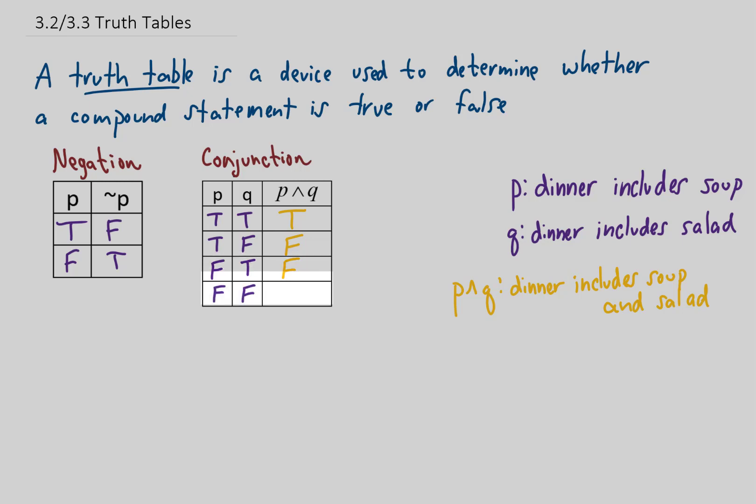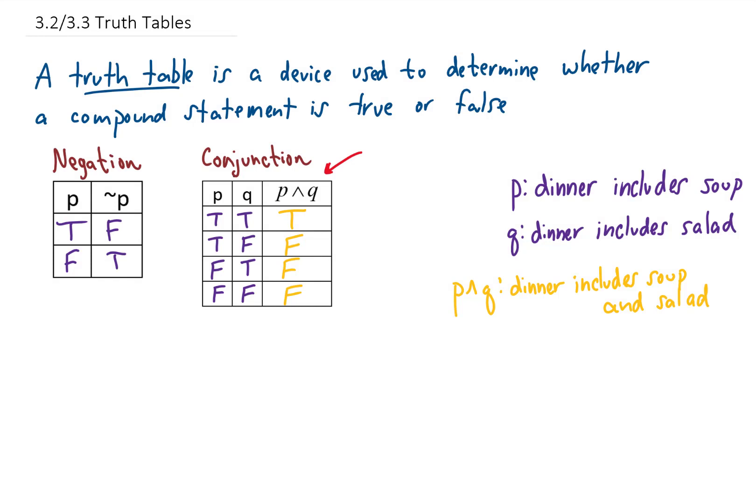Finally, we sit down to dinner and they don't give soup and they don't give salad, so the statement 'dinner includes soup and salad' is false. That is the basic truth table for a conjunction, and you'll notice that a conjunction is only true if both p and q are true.